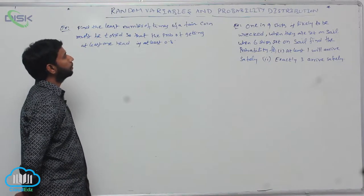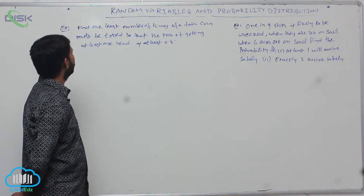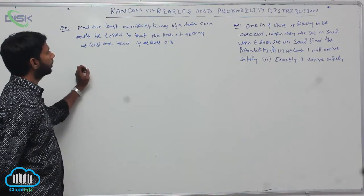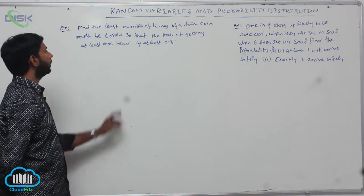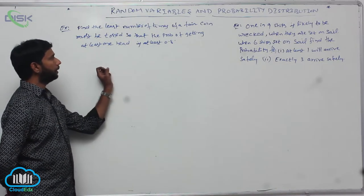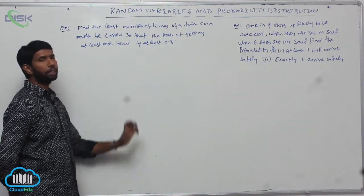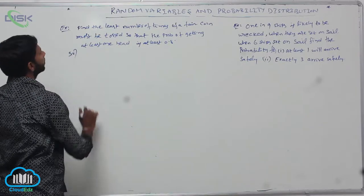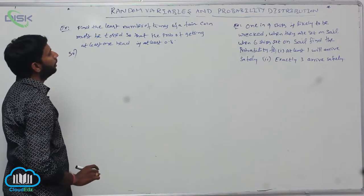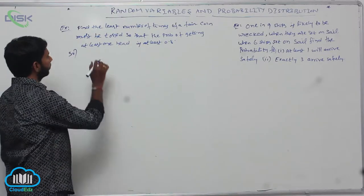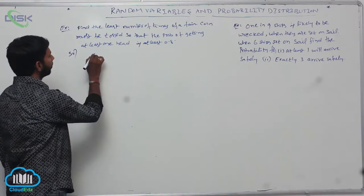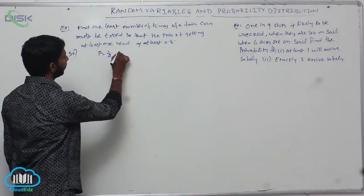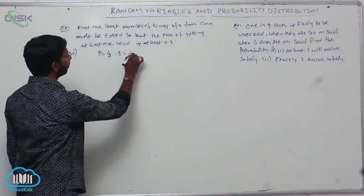Find the least number of times a fair coin must be tossed so that the probability of getting at least one head is at least 0.8. When the coin is tossed, P is equal to 1 by 2 and Q is equal to 1 by 2.